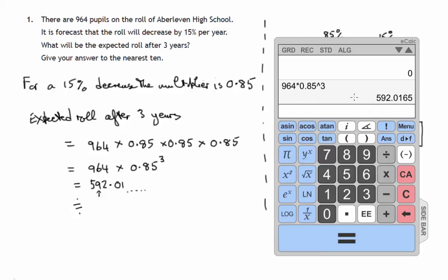It's nearer to 590 than it is to 600. So it's approximately 590 to the nearest 10.